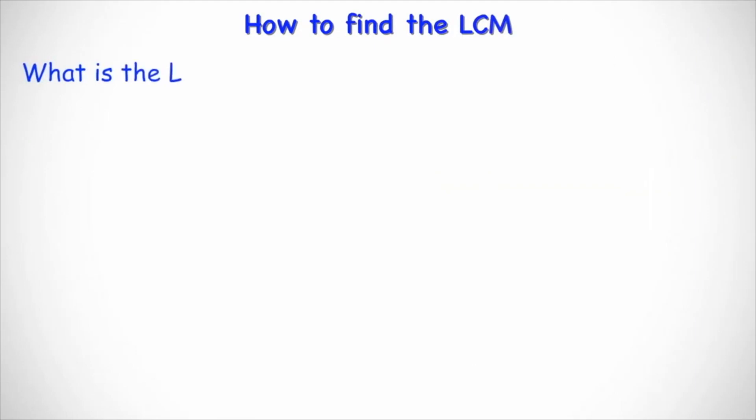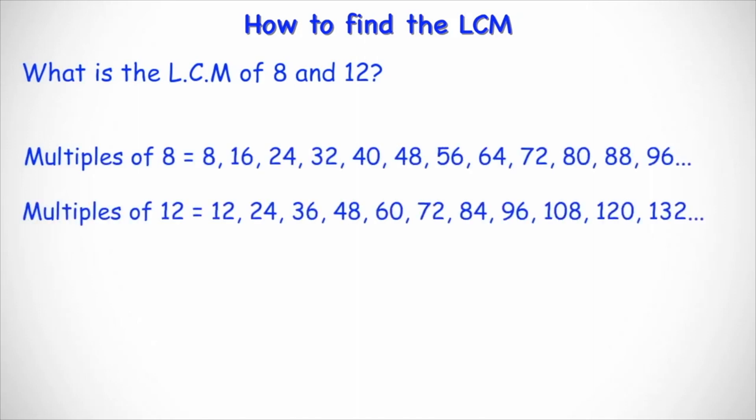Let's take a look at another example. What is the LCM of eight and 12? You list the times table for eight and you list the times table for 12. Then you find the first number that appears in both of the lists, or you find the first multiple that appears in both lists. In this case, 24 appears in both lists. Therefore the LCM or the lowest common multiple for eight and 12 is 24.